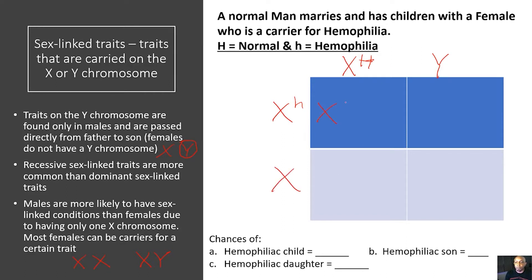Now let's do our cross. We have our X with big H and X with lowercase h — this offspring is going to be a female who is a carrier of the hemophilia trait. Next, X with lowercase h and Y — this is going to be a male who has hemophilia, because he doesn't have an additional X. Then X with big H and X — this is a normal female who does not have the hemophilia trait and is not a carrier. And finally X and Y — a normal male who will not have the hemophilia condition.